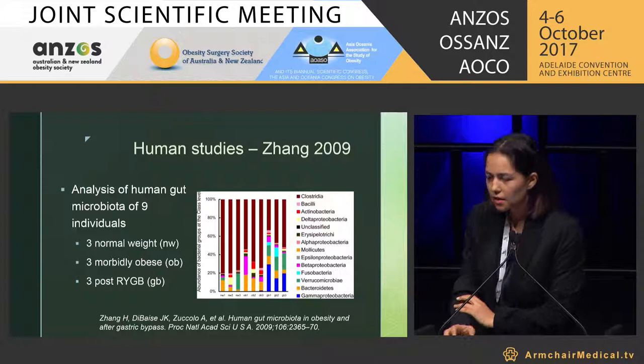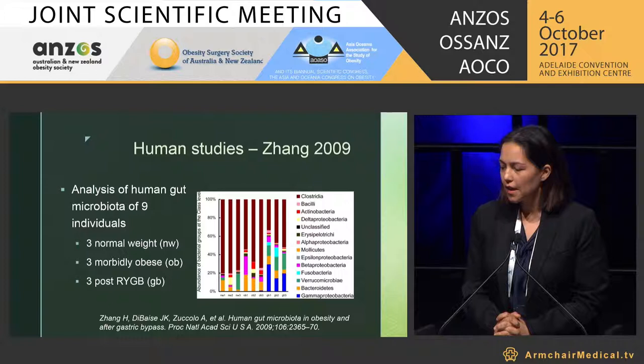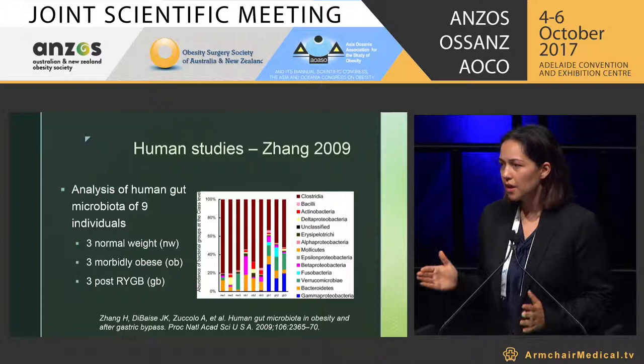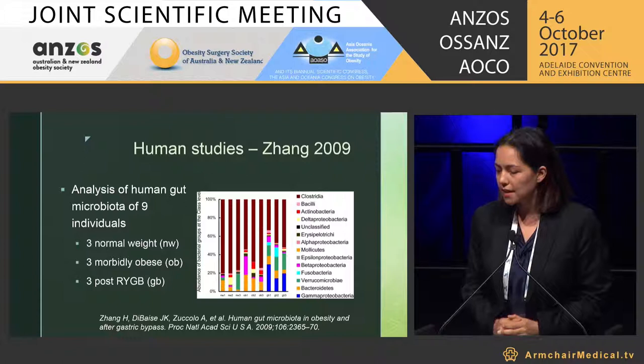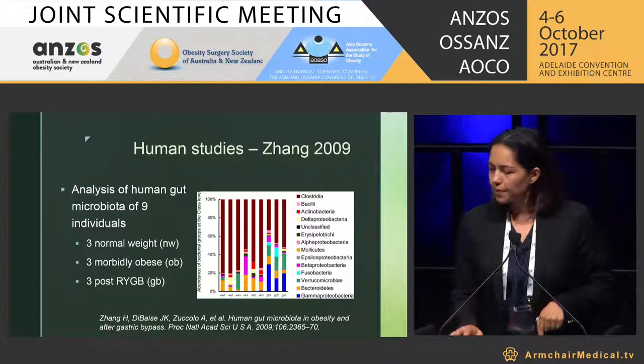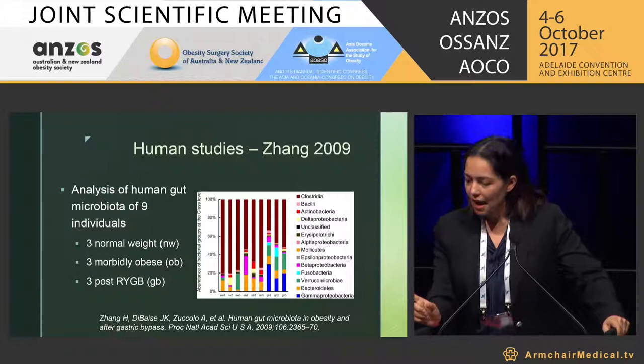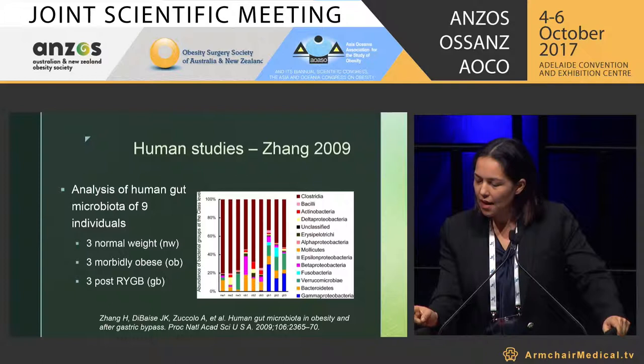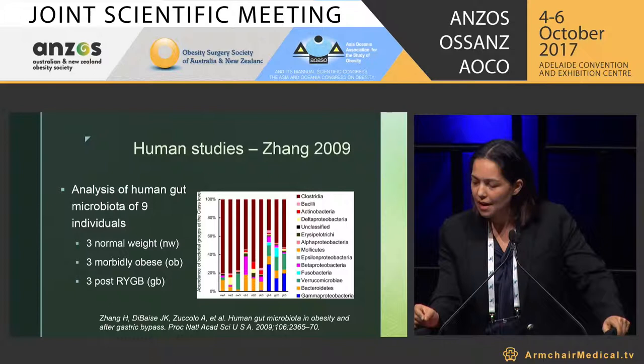What about the humans? The earlier study was done by Zhang in 2009. In terms of the numbers, all of these are extremely small for subjects; however, they were studied in great detail. He took three normal weight patients, three morbidly obese, and three post-Roux-en-Y gastric bypass patients, at 0, 8, and 15-month intervals. From the graph, you can compare the normal weight patients to the gastric bypass patients and see the decrease in overall Clostridia abundance. Likewise, looking at the proteobacteria — the gamma-proteobacteria, shown in dark blue — that's increased significantly in the Roux-en-Y gastric bypass patients.